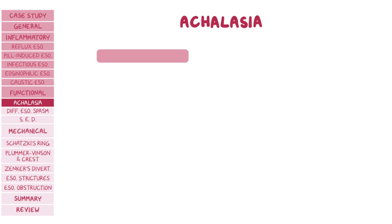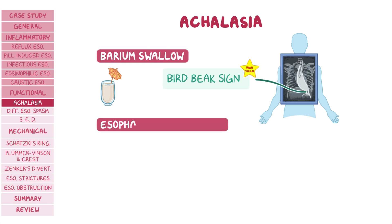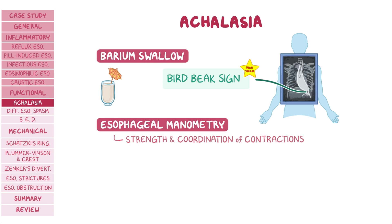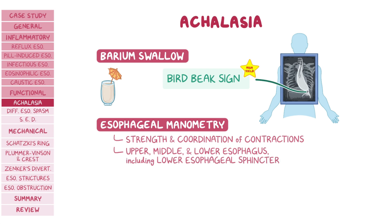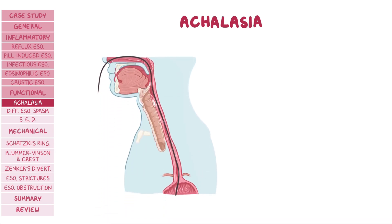For diagnosis, barium swallow in achalasia reveals dilatation of the esophagus above the obstruction and tapering of the lower part near the lower esophageal sphincter, also known as the bird's beak sign. The gold standard for diagnosis is esophageal manometry, which measures the strength and coordination of esophageal contractions when a person swallows. This measurement is done at multiple levels, including the upper, middle, and lower esophagus, as well as the lower esophageal sphincter.